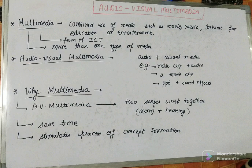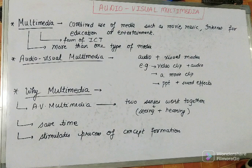As you all know, what does multi mean? Multi means more than one type. So multimedia means combined use of media such as movie, music, and internet for education or entertainment. Multimedia is a form of ICT, where ICT stands for information and communication technology. Multimedia means using more than one type of media.